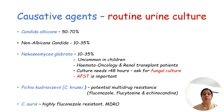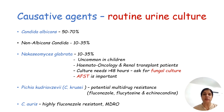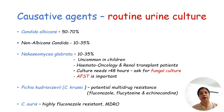Because 80% of Nakaseomyces glabrata isolates are resistant to fluconazole, antifungal susceptibility testing should be requested. Another strain, Pichia kudriavzevii, is also resistant to fluconazole — inherently and 100% resistant. It is another potential multi-drug resistant organism, also resistant to flucytosine and echinocandins. Additionally, Candida auris, another MDRO, has recently emerged. Because of all these resistant isolates, fungal culture with antifungal susceptibility testing should always be requested for urine cultures.